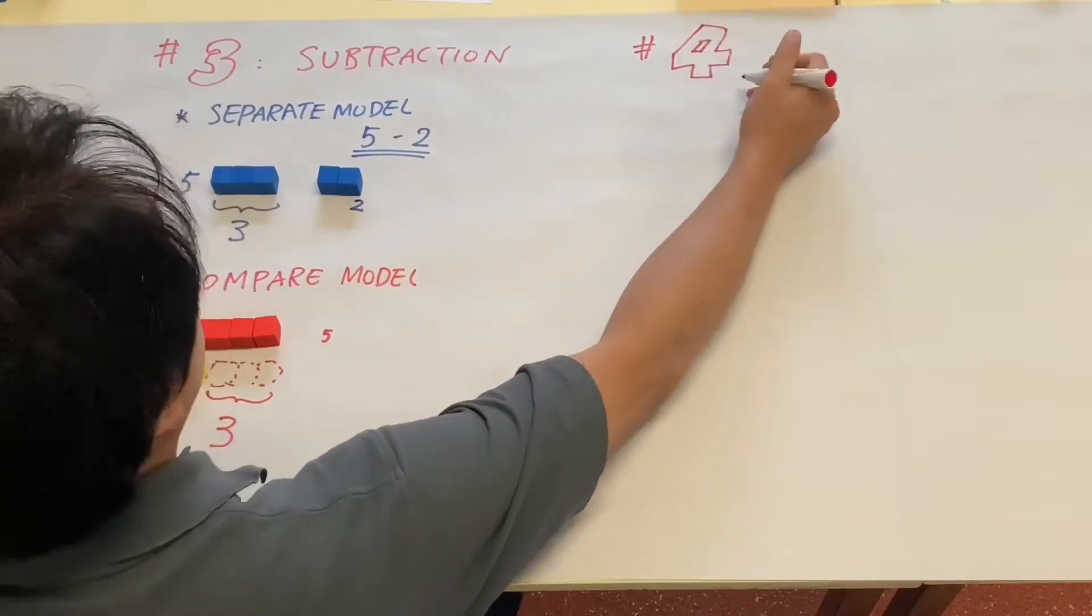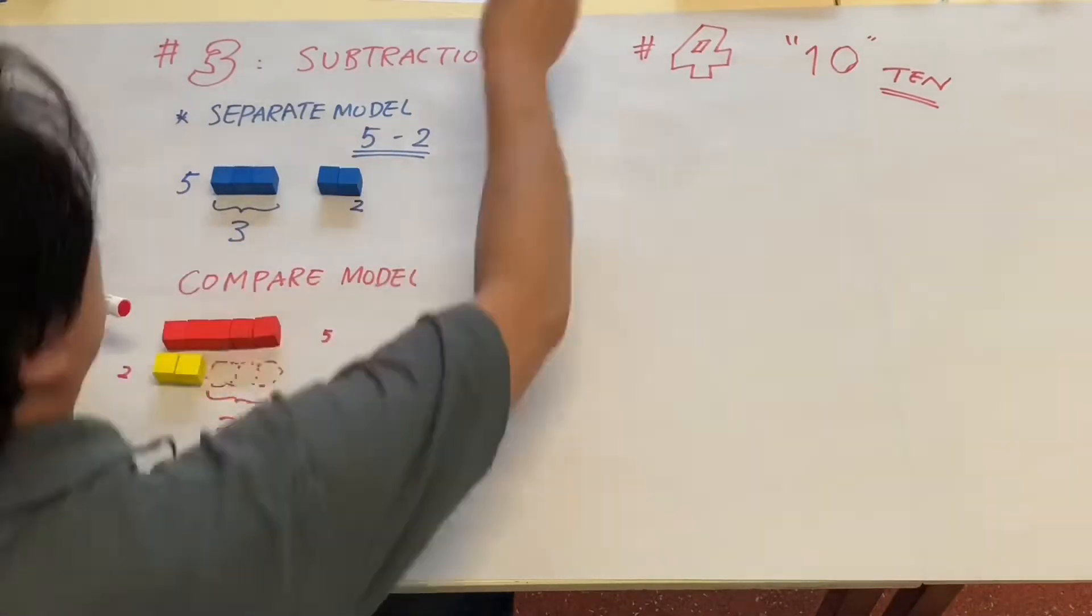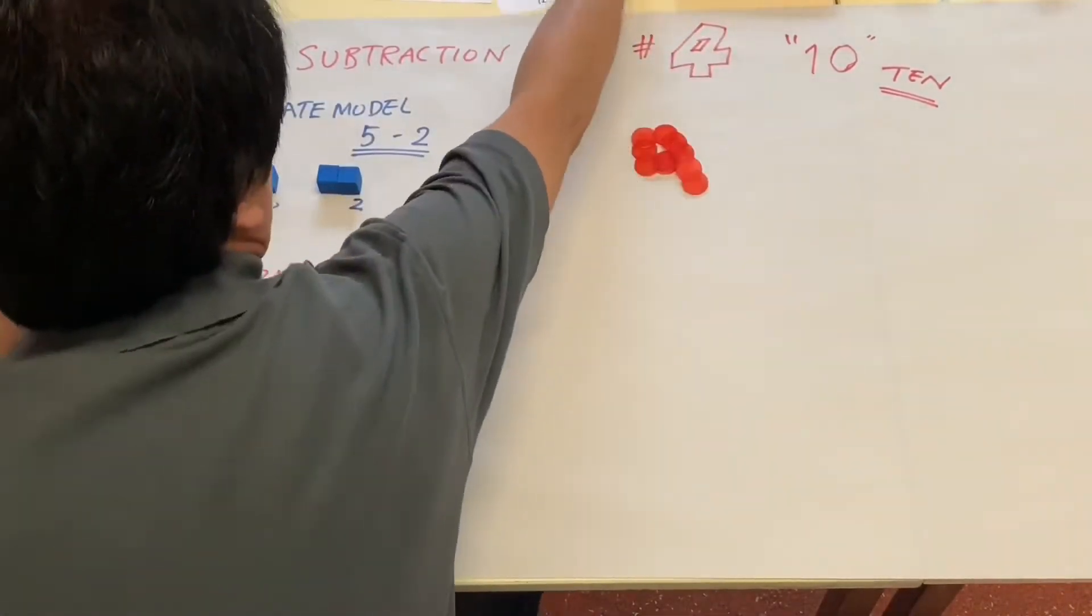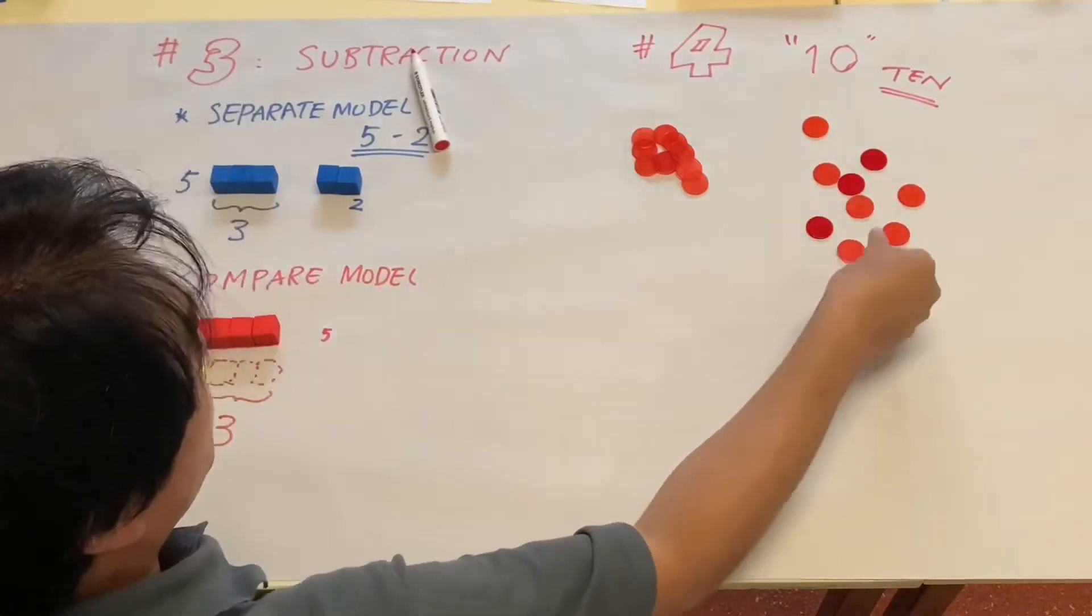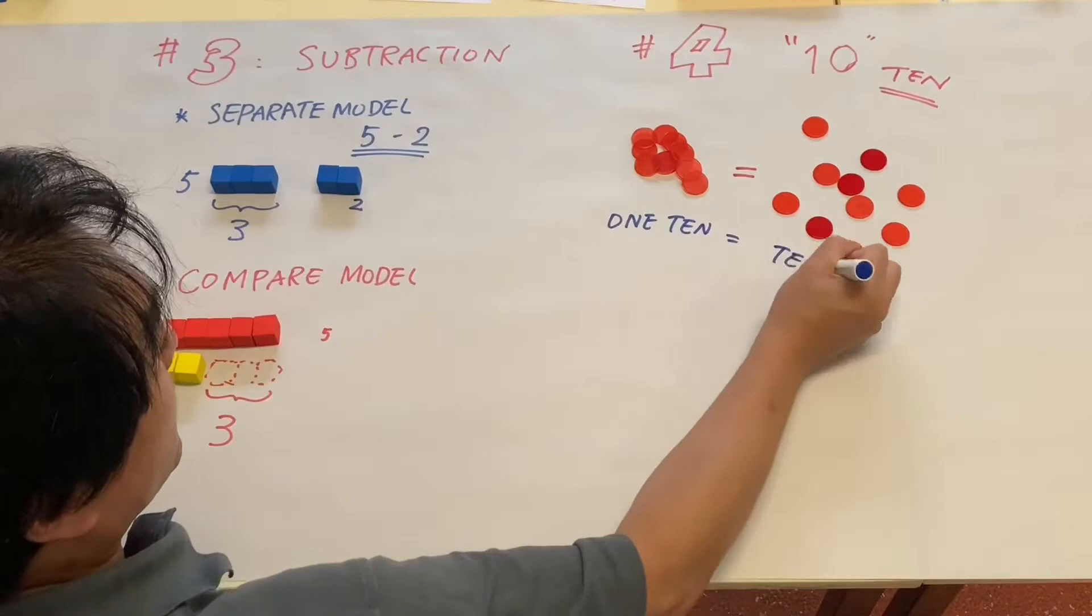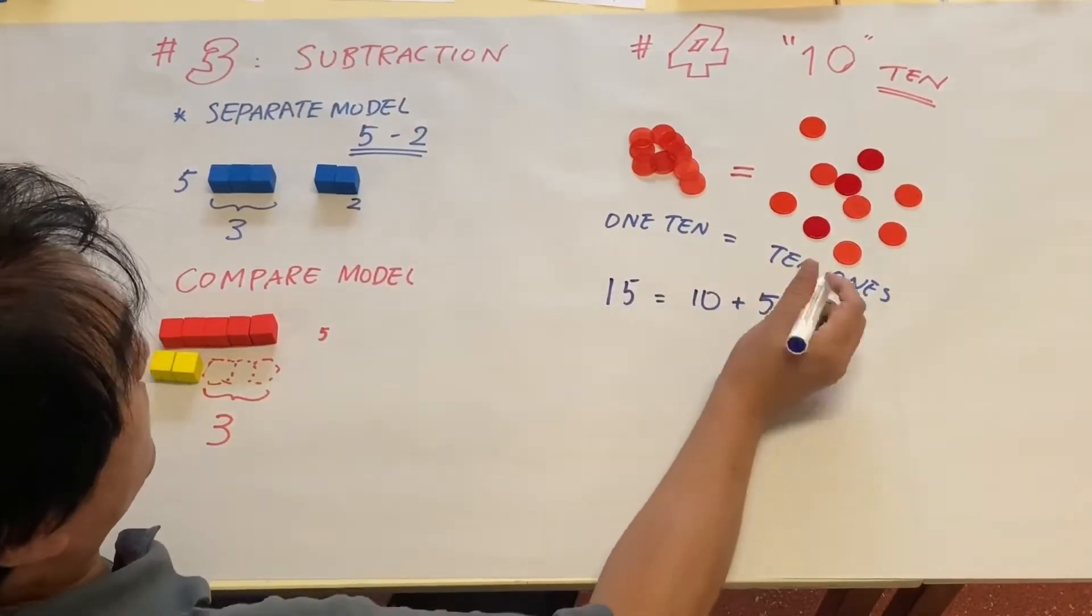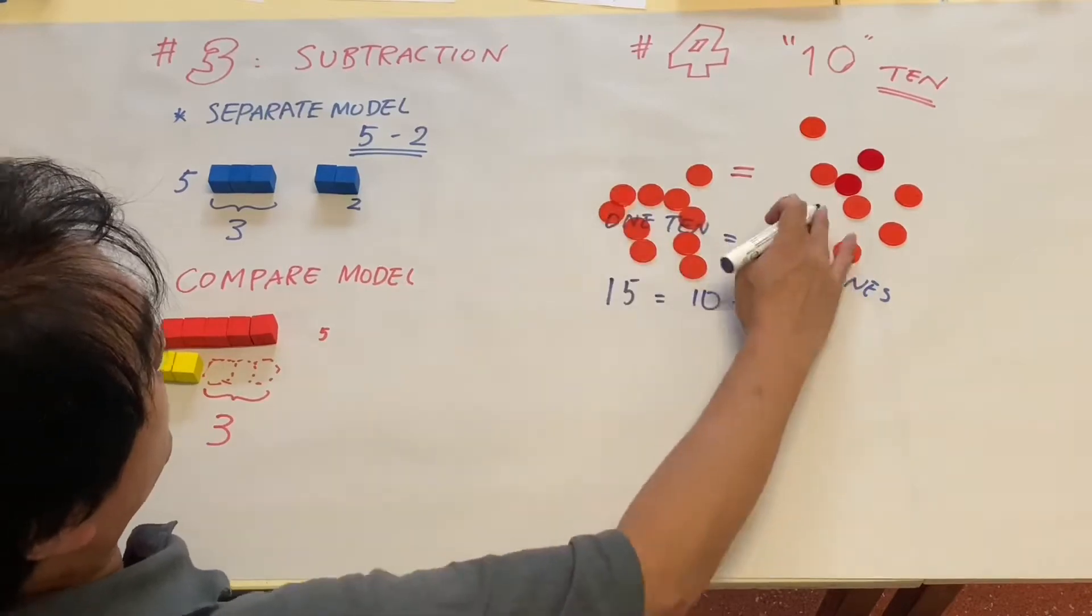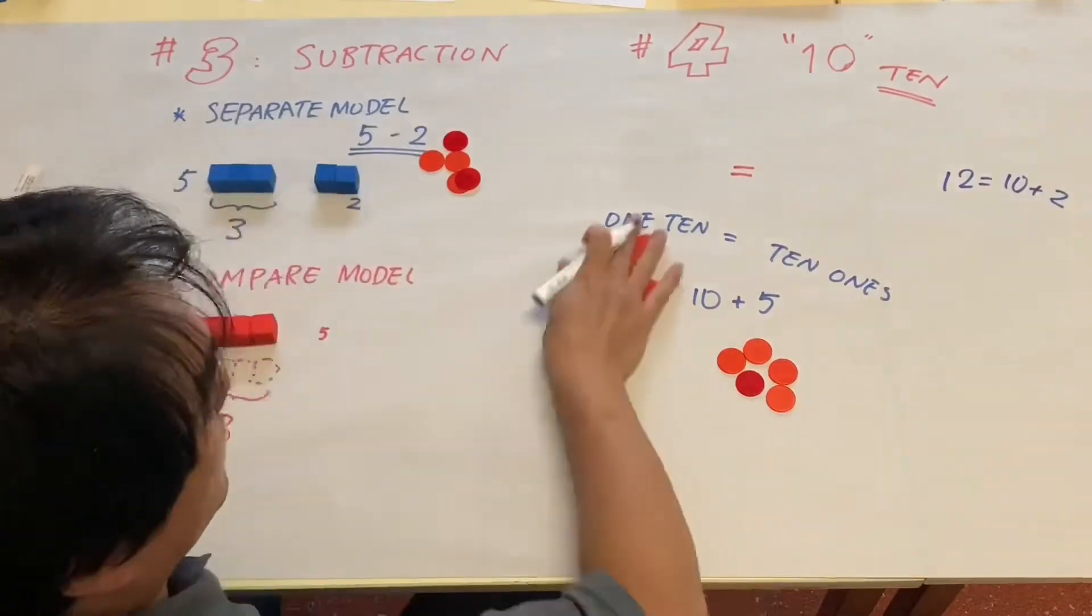Video number four is a very important one that students are going to go through the concept of utilizing the ten. So one ten is exactly the same as ten ones, and fifteen is made out of ten and five. Twelve is ten plus two, and ten plus two equals twelve.